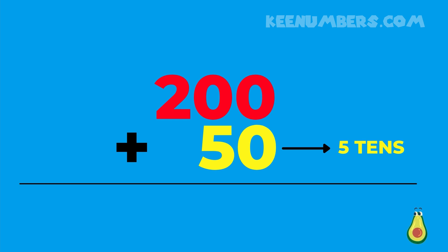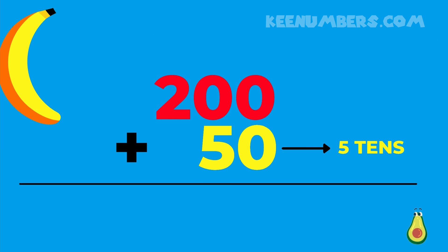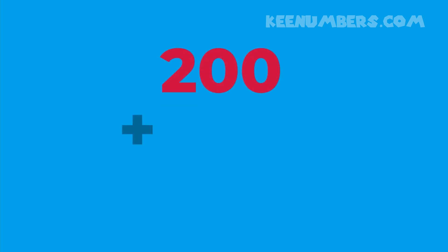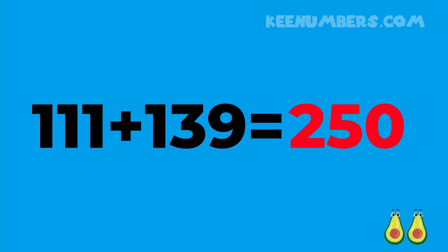Thus we have reduced this problem to 200 plus 50. What in the world is the banana doing back here? Get out of here, banana — that banana makes no sense, it keeps showing up at the wrong time. 250 — that's 200 plus 50, that's 250. 200 plus 50 equals 250, and that's why 111 plus 139 is equal to 250. Congratulations, well done, class.